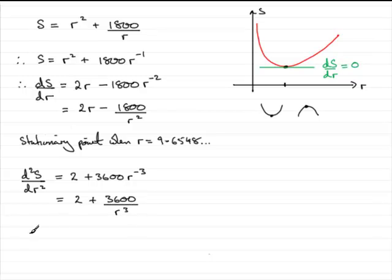Now we want to test the nature of the stationary point when r equals 9.6548. So what we need to do is put this into here and see whether we get a plus value or a negative value.